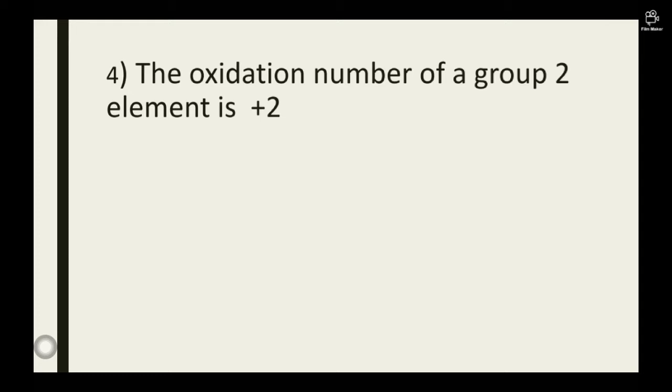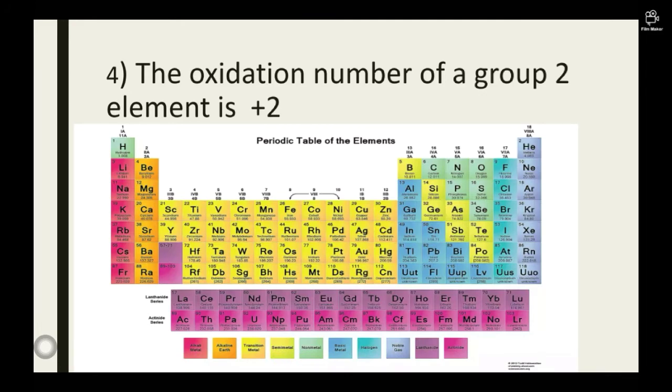The fourth law: The oxidation number of a group 2 element is plus 2. In the periodic table, group 2 elements have been marked and displayed on the screen. They all have an oxidation number of plus 2 in their compound form anywhere you find them.